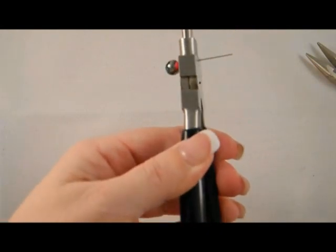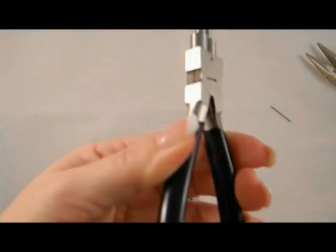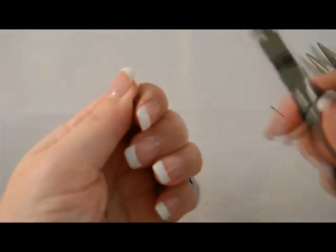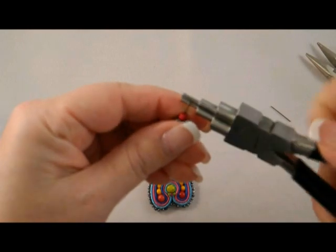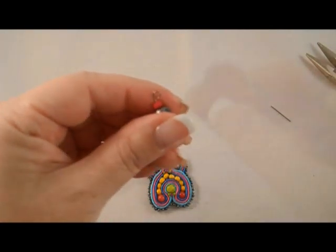Use your flush cutters to cut off the excess head pin. Holding the beads firmly, use your looping pliers or your rosary pliers to create a centered loop at the top of the head pin.